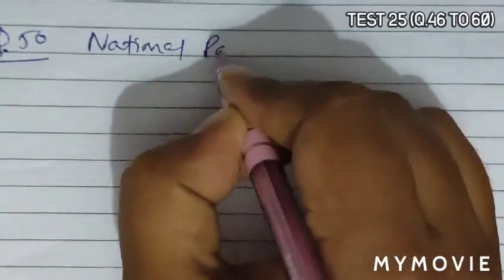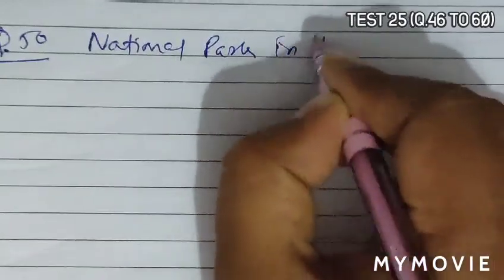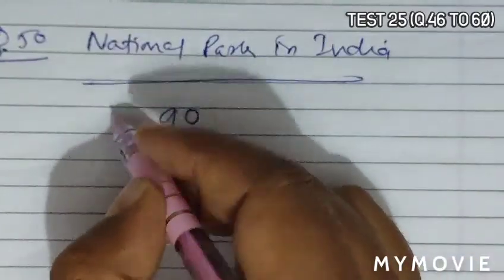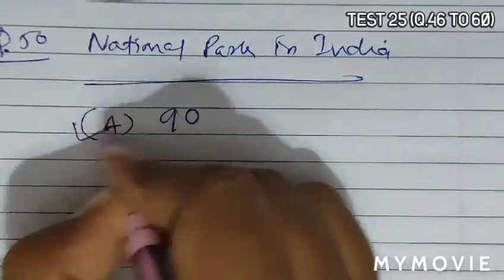Question 50 asks that number of national parks in India. Now there are total 90 national parks in India. So option A becomes the correct answer.